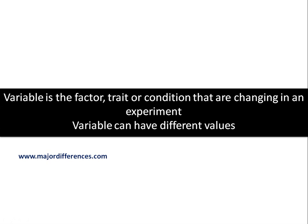Starting with the definition of variable: a variable is any factor, trait, or condition that is changing in an experiment. It can have different values. There are different types of variables in an experiment. Let's take an example to explain the concept.